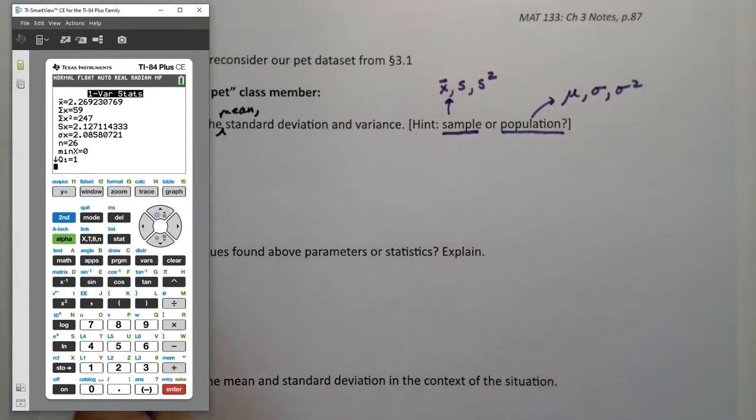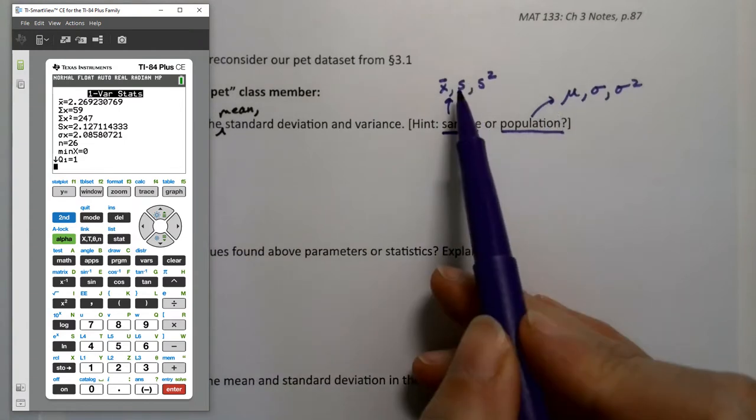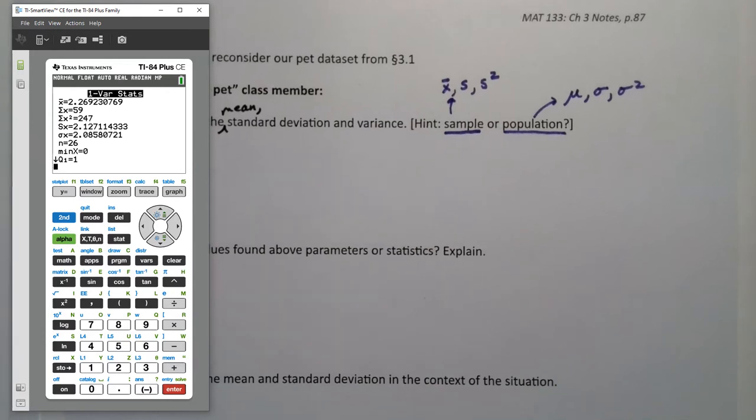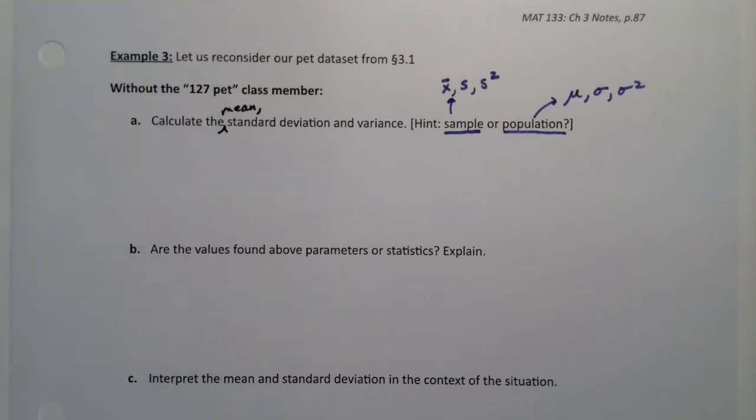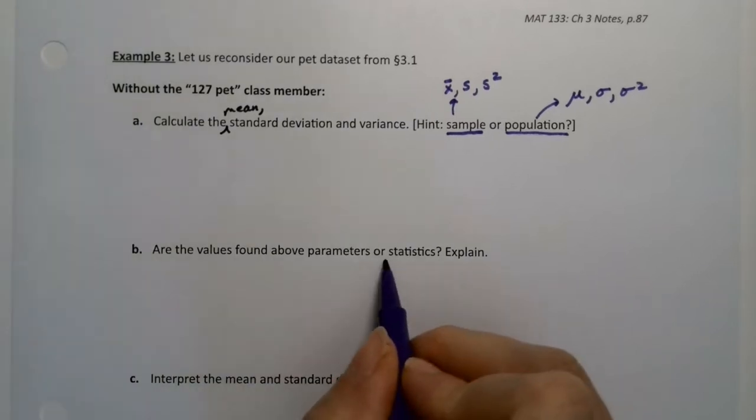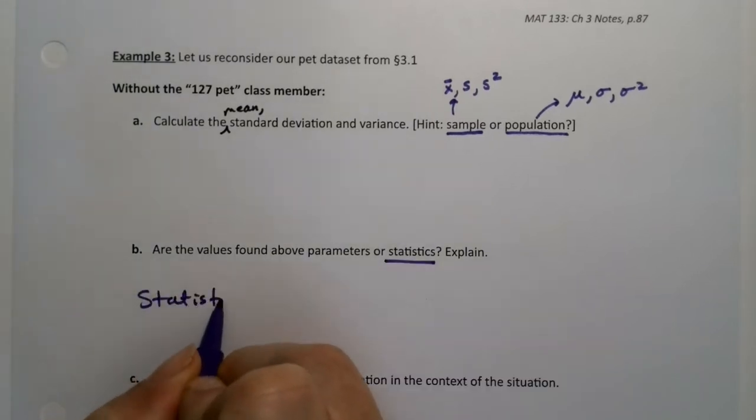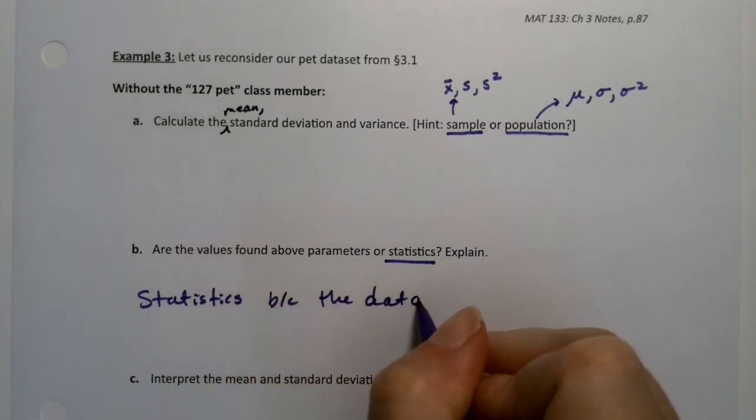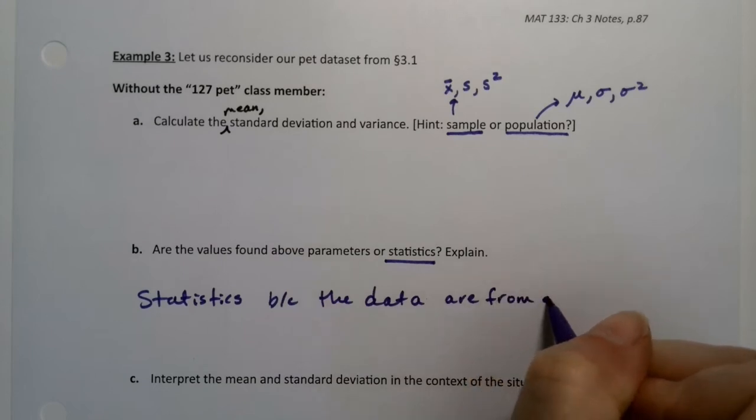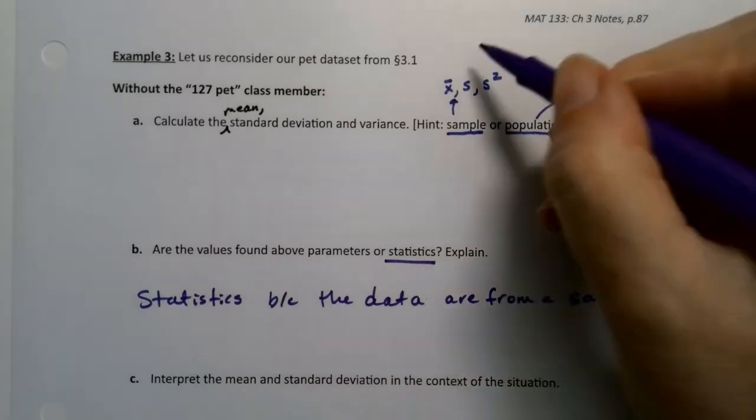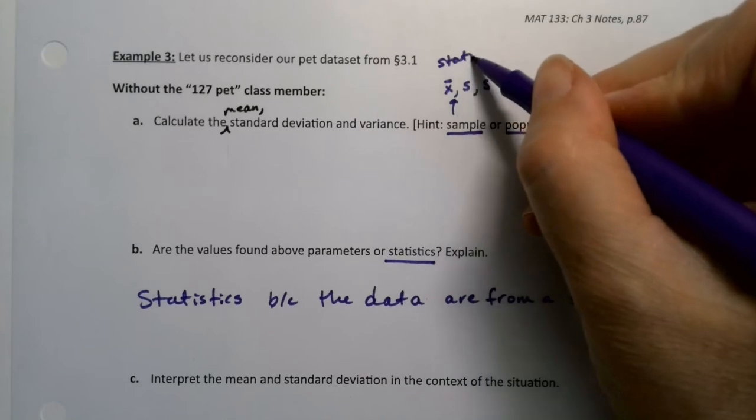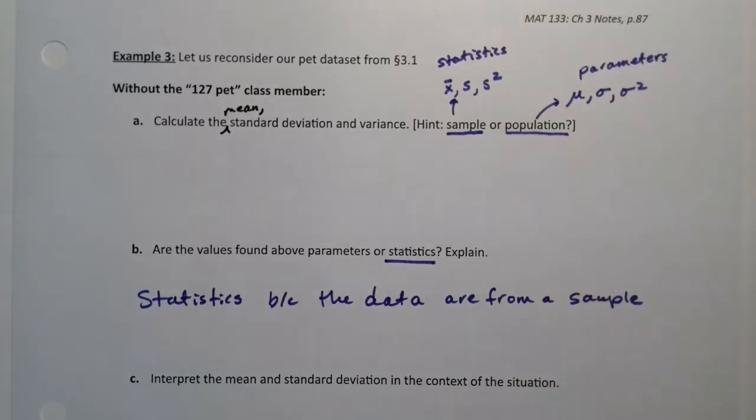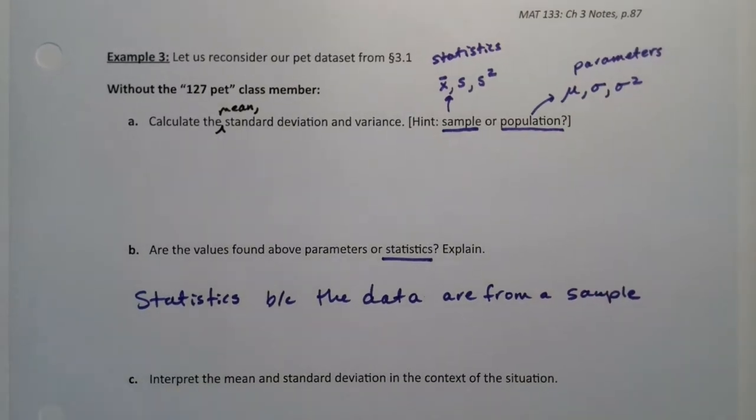So when you're looking at the calculator, you want to think, oh, this was a sample, so I want s, right? We're going to use these values. As a matter of fact, that's answering the question down below, which is these are statistics because the data are from a sample. Up here, you could say statistics, which are these values, and parameters, which are these values. Now the calculator doesn't really know the difference, so it just finds them both for you.